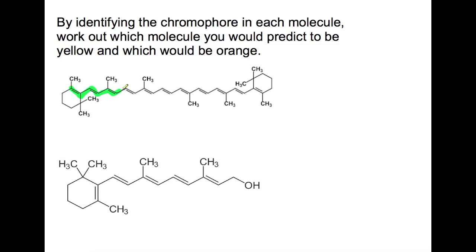The first part of this question asks you to identify the chromophore in each molecule. So the chromophore is the series of alternating single and double bonds which you find throughout the molecule, which I am highlighting in green.